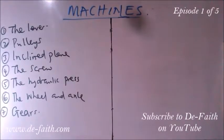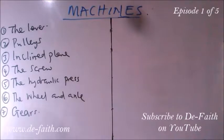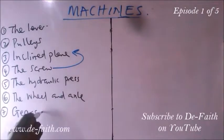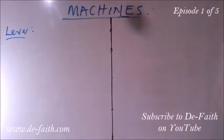Machines are classified based on the kind of work they help us carry out. We have the lever, the pulley, the inclined plane, the screw, the hydraulic press, the wheel and axle, and so on. Note that some are modifications of others — for instance, the screw is a modification of the inclined plane, and the gear is a modification of the wheel and axle.